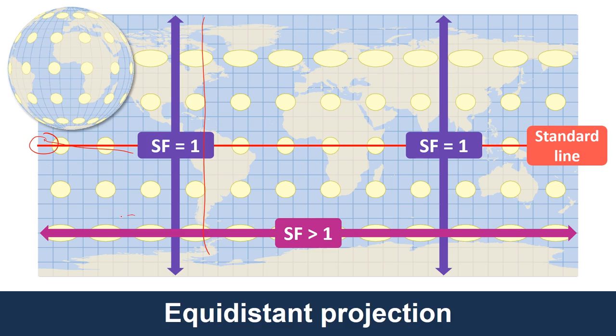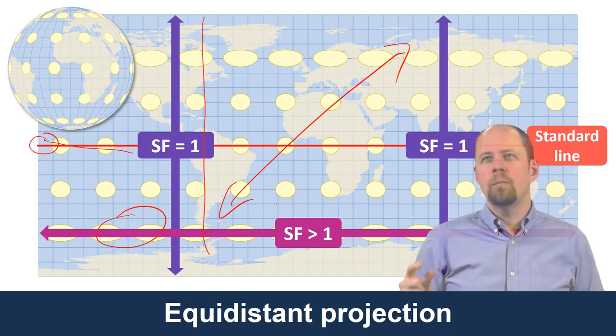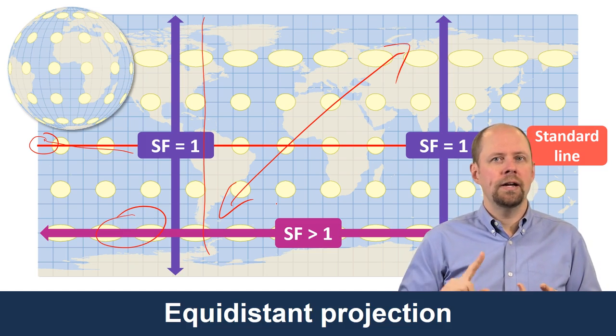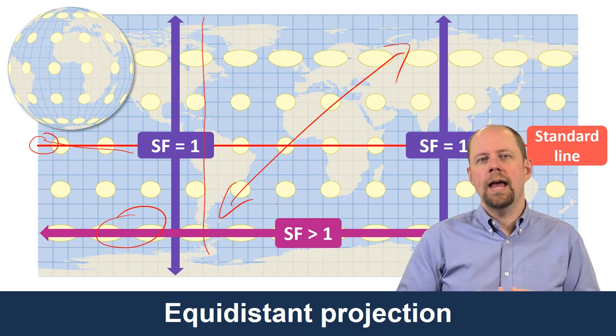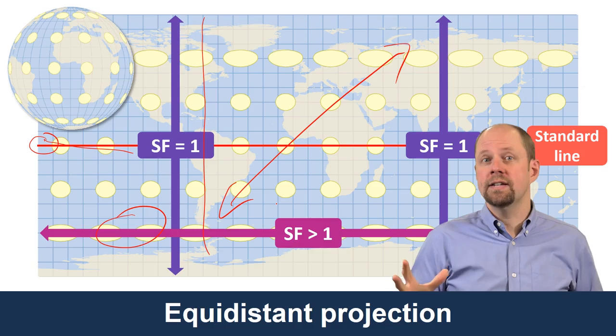But because we're having this scale factor greater than one in the horizontal direction, any other line that you draw on that map is going to have distortion in the east-west direction, and so the distances will not be correct for anything that's not on the standard line or is not on a meridian, in other words, where the scale factor is not one. So part of what I'm doing here is trying to tie together this idea of how distortion is taking place, how we measure scale factor, and how we can relate that to measuring distances.